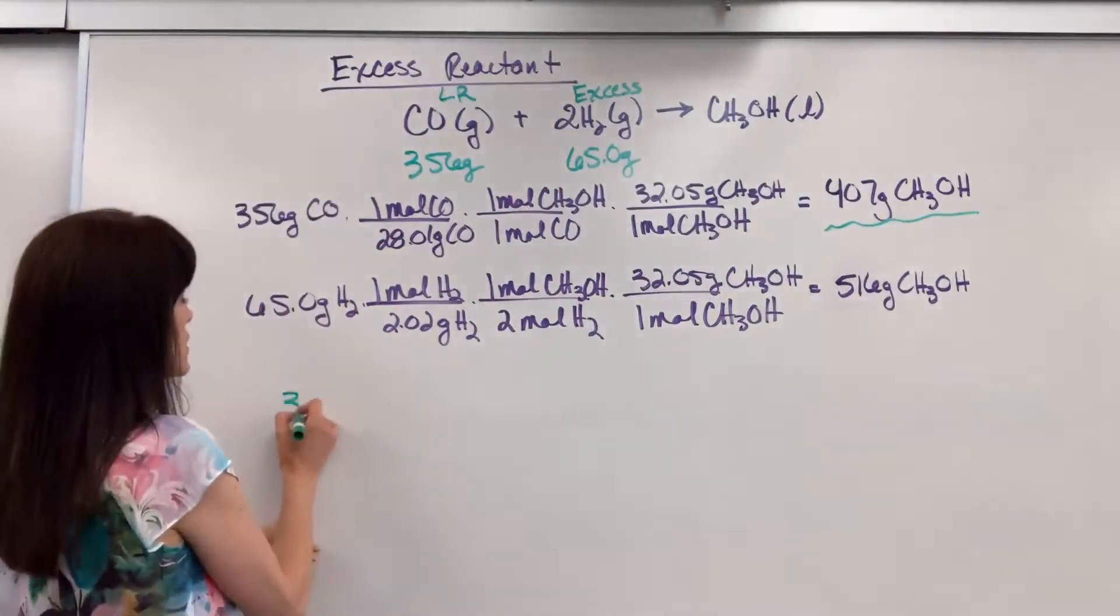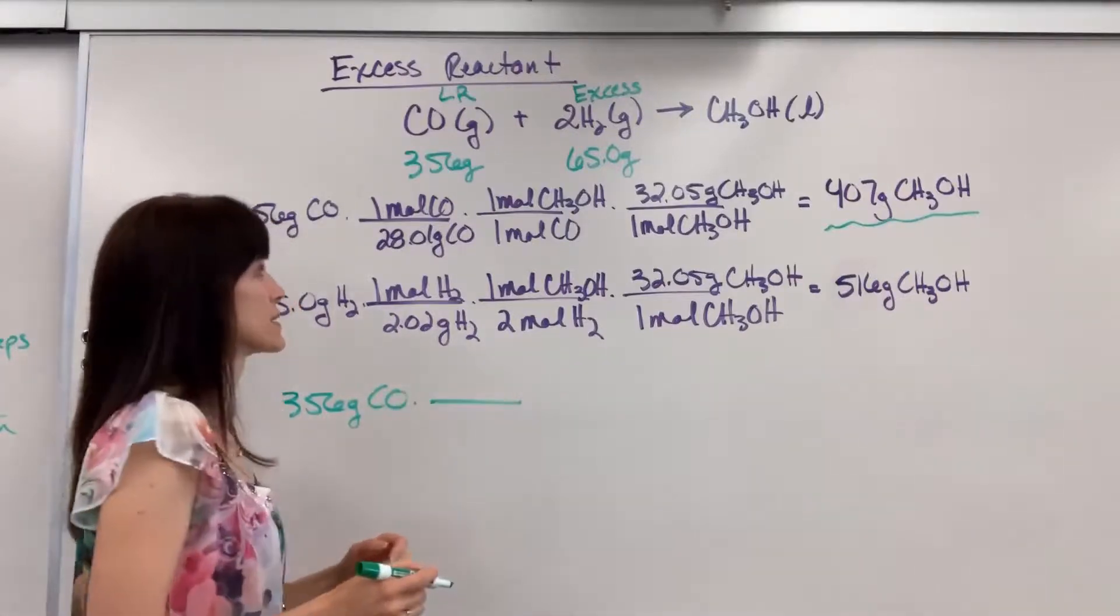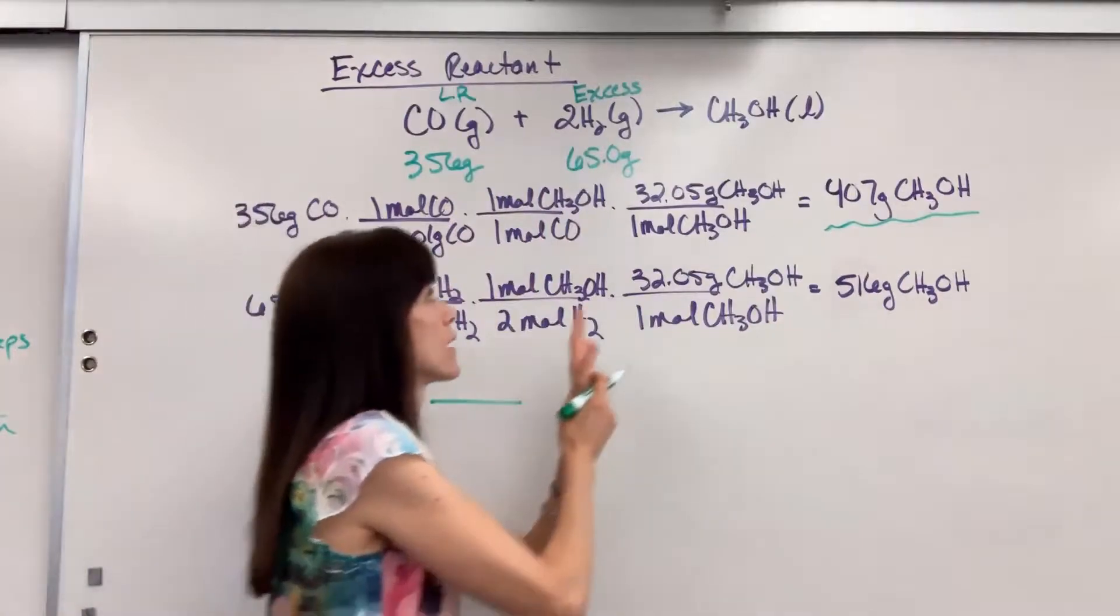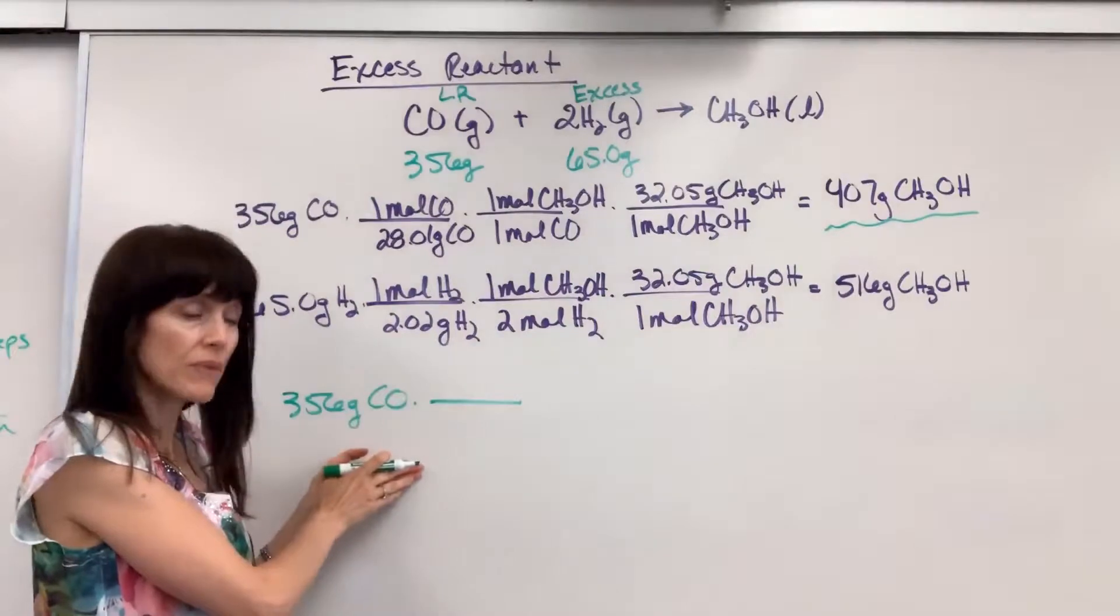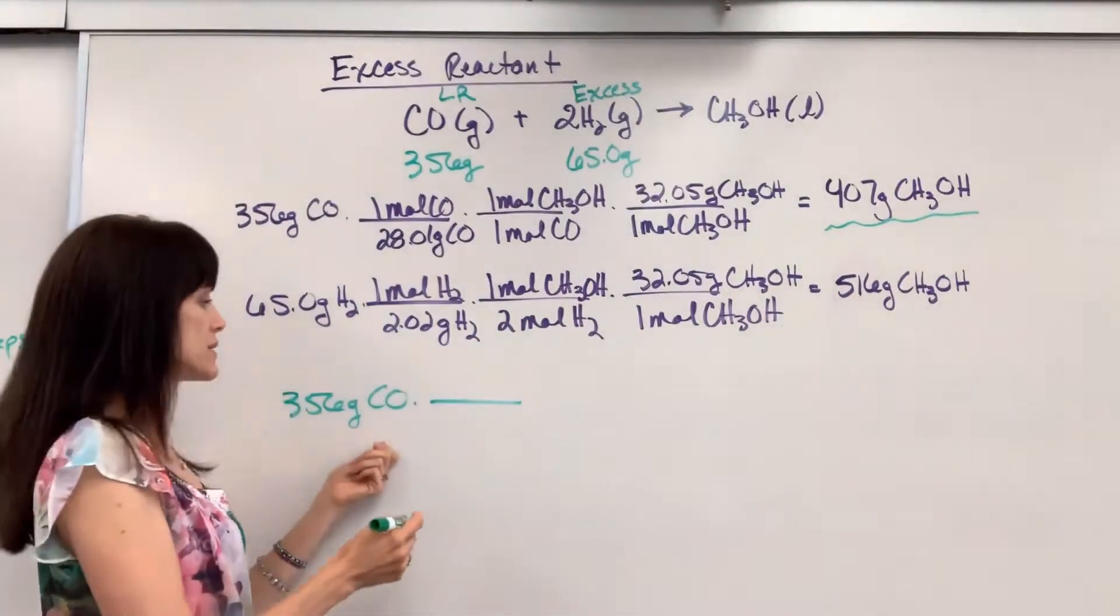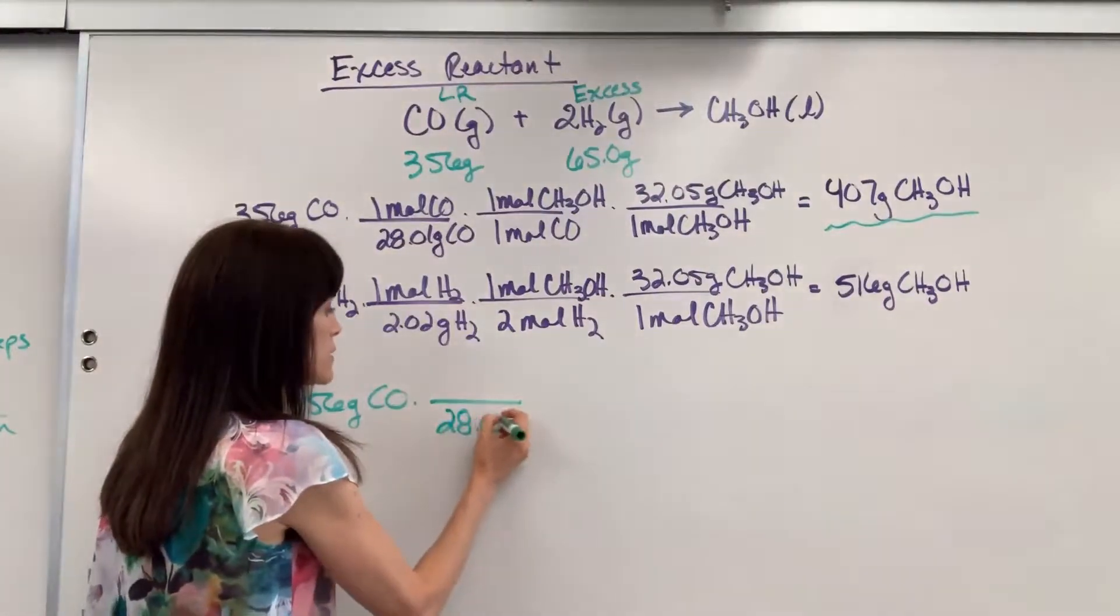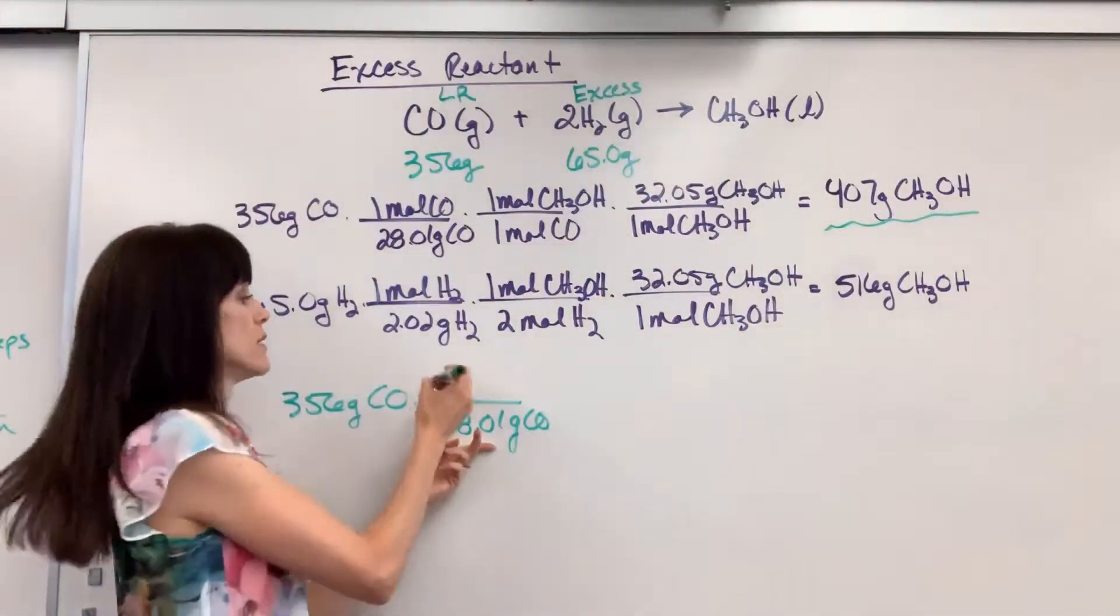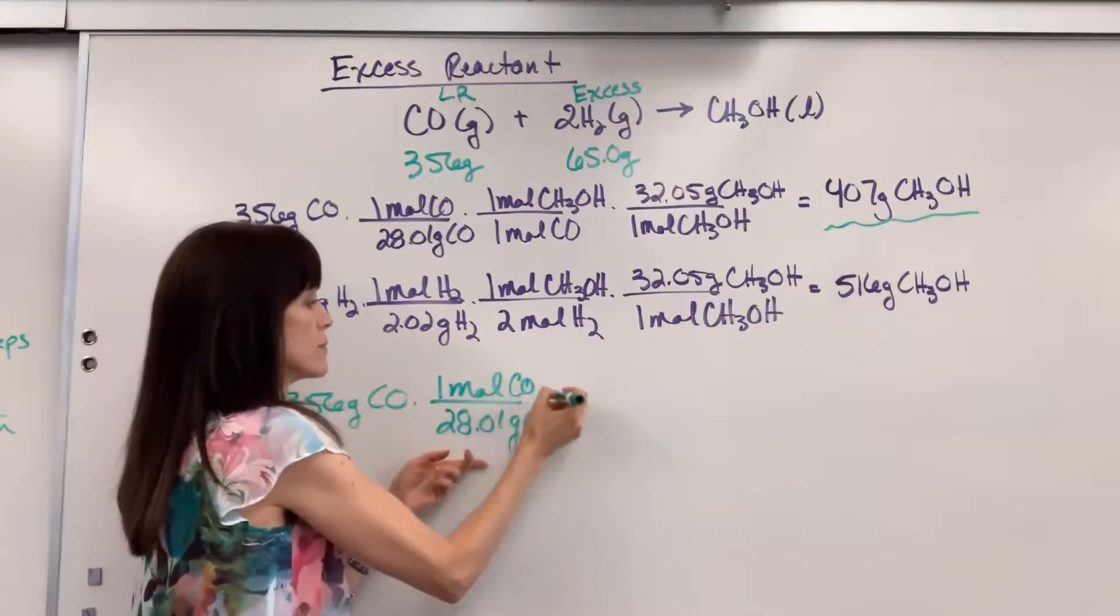We'll begin with the 356 grams of carbon monoxide. Now I'm going to go from one compound to another. To walk that bridge, I have to use the molar ratio. So I bring this to moles. Use the molar mass in the periodic table, one carbon plus one oxygen. It's going to give us 28.01 grams of carbon monoxide.